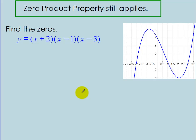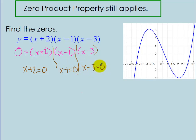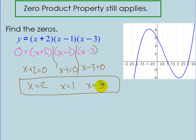Sometimes we can still apply the zero product property to polynomials, even beyond x squared. So if I wanted to find the zeros of y equals (x plus 2)(x minus 1)(x minus 3), I set y equal to zero and solve each factor equal to zero: x plus 2 equals 0, x minus 1 equals 0, and x minus 3 equals 0. Solving each gives x equals negative 2, x equals positive 1, and x equals positive 3. So my zeros are negative 2, 1, and 3.